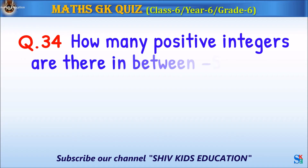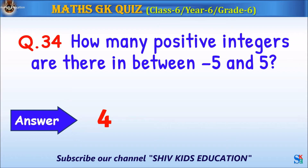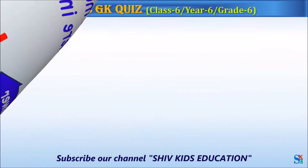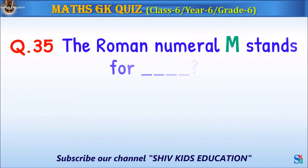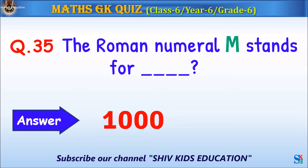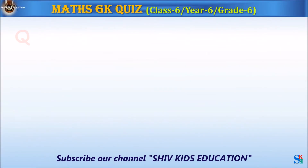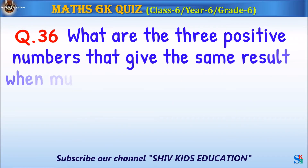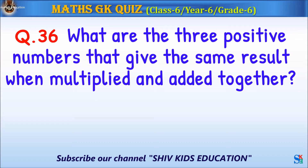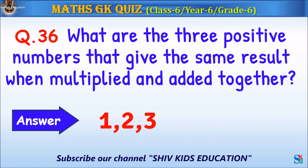Question 34: How many positive integers are there between minus 5 and 5? The answer is 4. Question 35: The Roman numeral M stands for what? The answer is 1,000. Question 36: What are the three positive numbers that give the same result when multiplied and added together? The answer is 1, 2, and 3.